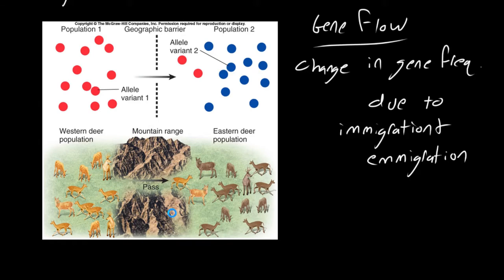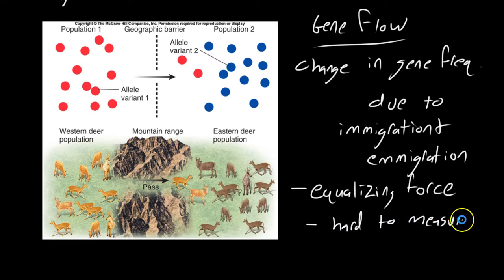The problem with gene flow is it's often viewed as an equalizing force. And because of this, it's actually really hard to measure. You can run computer simulations, but you're at the mercy of individuals. And individuals have their own mind and own free will. So it's kind of hard to predict. But there's many different programs out there that can run simulations and you have to account for gene flow.